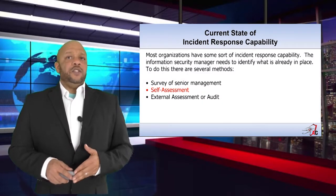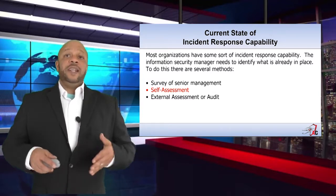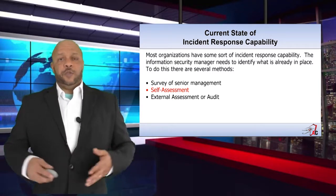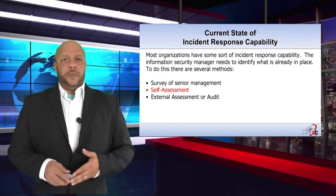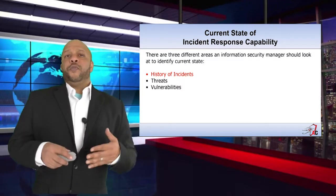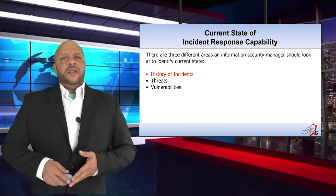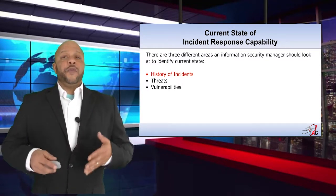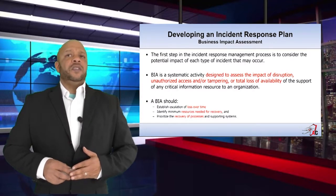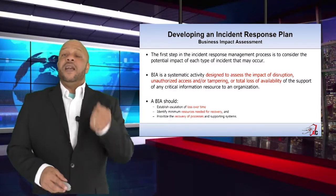Most organizations have some sort of incident response capability. The information security manager needs to identify what is already in place by surveying senior management, taking a self-assessment, or having an external assessment or audit performed. There are three different areas to look at to identify the current state: the history of incidents, threats, and vulnerabilities. The first step in the incident response management process is to consider the potential impact of each type of incident that may occur.